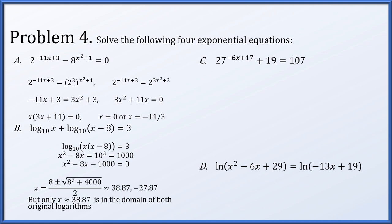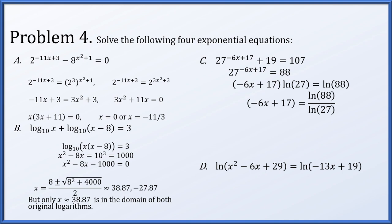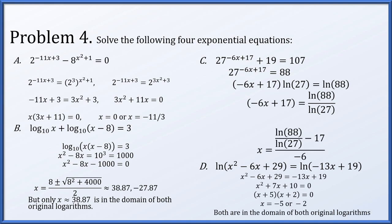Part c: 27^(−6x + 17) + 19 = 107. Subtract 19 from both sides, then take the natural log of both sides. On the left, ln(27^(−6x + 17)) = (−6x + 17)·ln(27). On the right, ln(88). Dividing both sides by ln(27), subtracting 17, and dividing by −6 gives the solution for x.